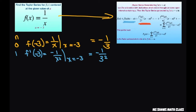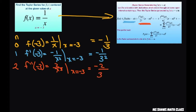So that's n equals 2. f double prime of negative 3 equals 2 divided by x cubed. We're evaluating at x equals negative 3, and that's going to give me negative 2 divided by 3 cubed.